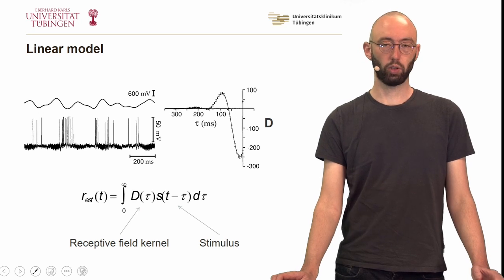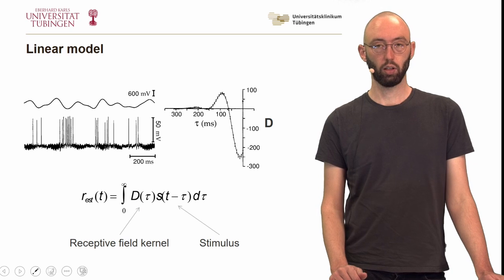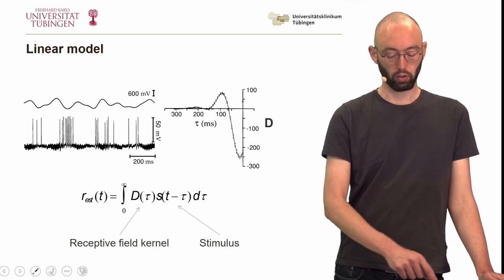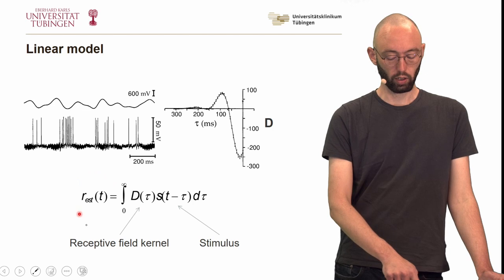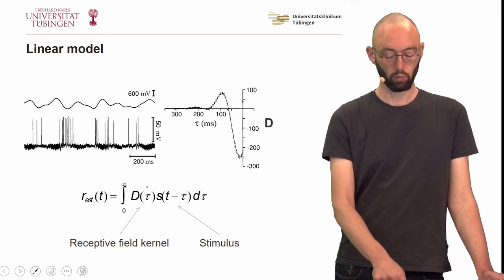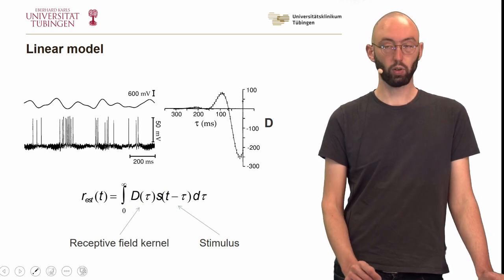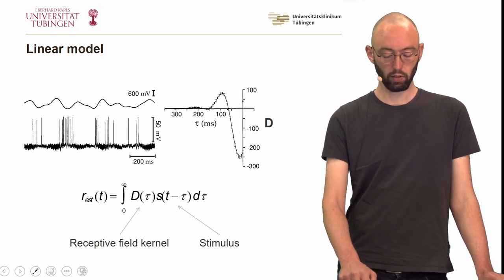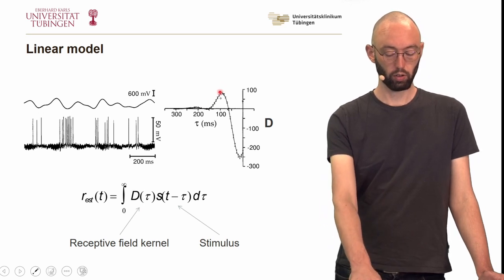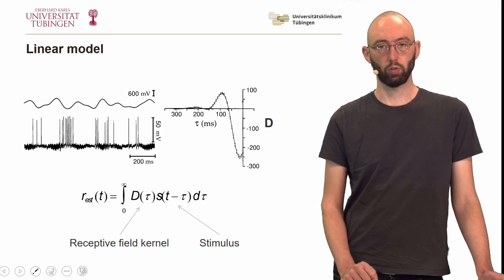How can we make this relationship more quantitative? We can build a linear model between our stimulus and the electrical activity of the neuron — trying to estimate the rate as a convolution of the stimulus with a receptive field kernel. If we compute this kernel, it looks like this: if the stimulus was up and then falling, the neuron spiked.